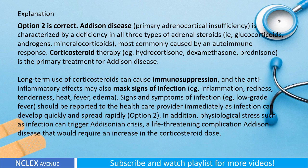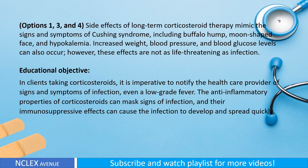Addison's disease — primary adrenocortical insufficiency — is characterized by a deficiency in all three types of adrenal steroids: glucocorticoids, androgens, and mineralocorticoids, most commonly caused by an autoimmune response. Corticosteroid therapy (hydrocortisone, dexamethasone, prednisone) is the primary treatment. Long-term use of corticosteroids can cause immunosuppression, and the anti-inflammatory effects may also mask signs of infection — including redness, tenderness, heat, fever, and edema. A low-grade fever should be reported to the health care provider immediately, as infection can develop quickly. Additionally, physiological stress such as infection can trigger an Addisonian crisis — a life-threatening complication requiring an increase in corticosteroid dose.